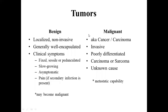For the last lectures we've been talking about tumors — benign and malignant. This is basically a summary of their characteristics. Benign tumors are localized, well-encapsulated, can be fixed or pedunculated, slow growing, and can be asymptomatic. If there is pain, it is because of secondary infection. We also know that benign tumors can also become malignant.